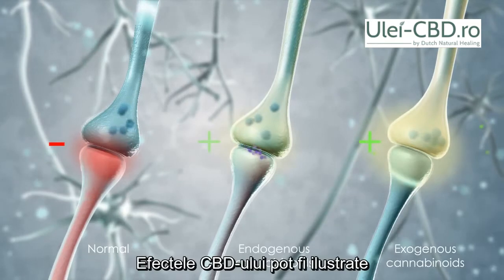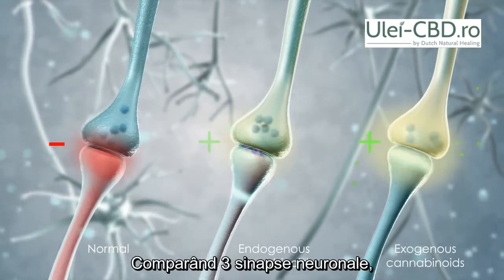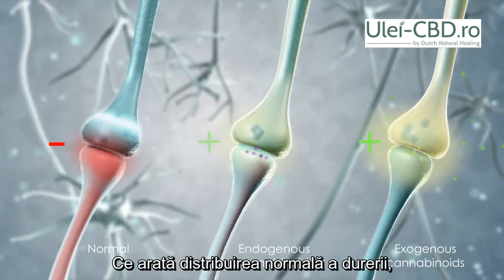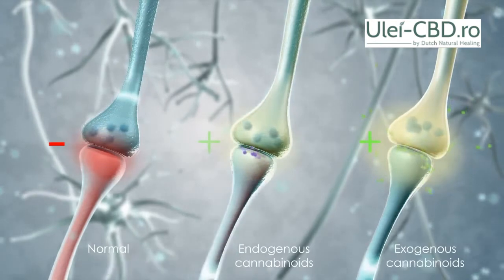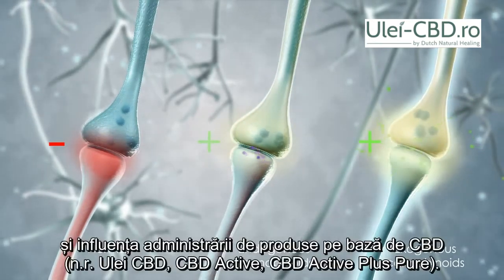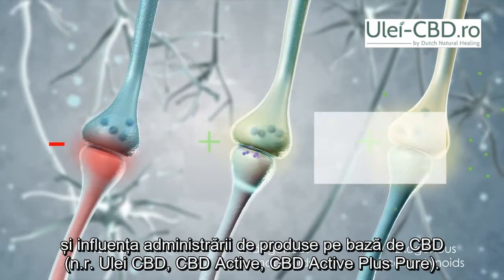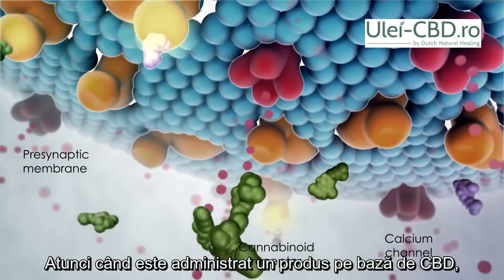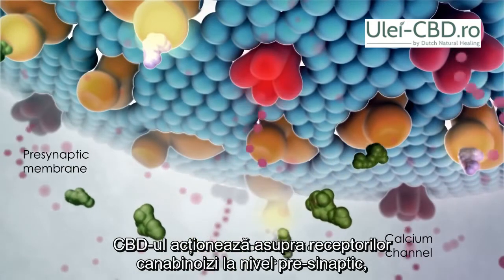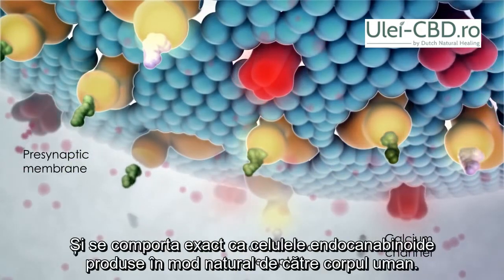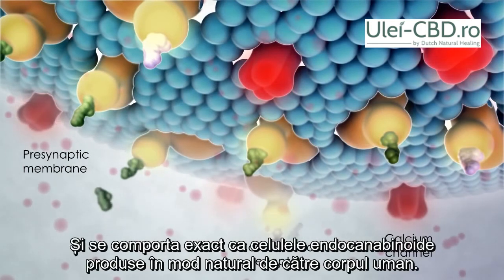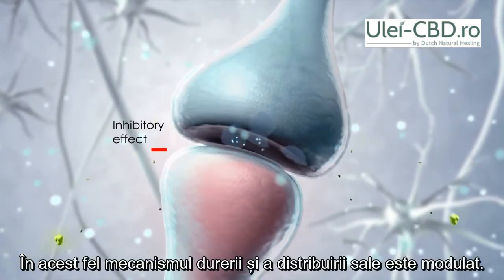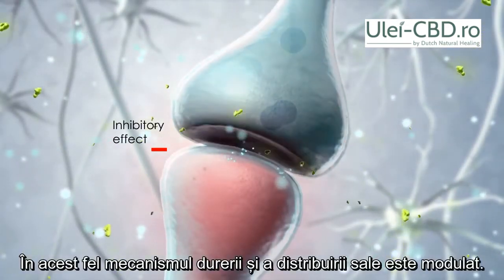The effects of cannabinoids may be illustrated by comparing three neuronal synapses showing normal pain transmission, the influence of endogenous cannabinoids, and the influence of exogenous cannabinoid administration. Exogenous cannabinoids from the bloodstream bind to cannabinoid receptors on the presynaptic neuron and mimic the endogenous synaptic modulatory effect by decreasing influx of calcium ions. In this way, pain and other neural processes are modulated.